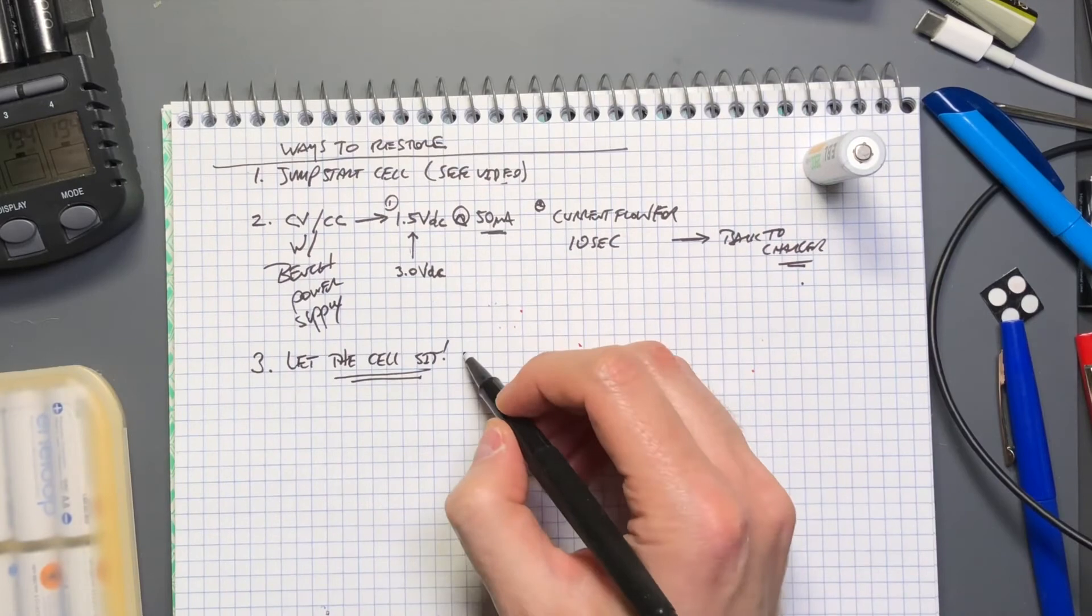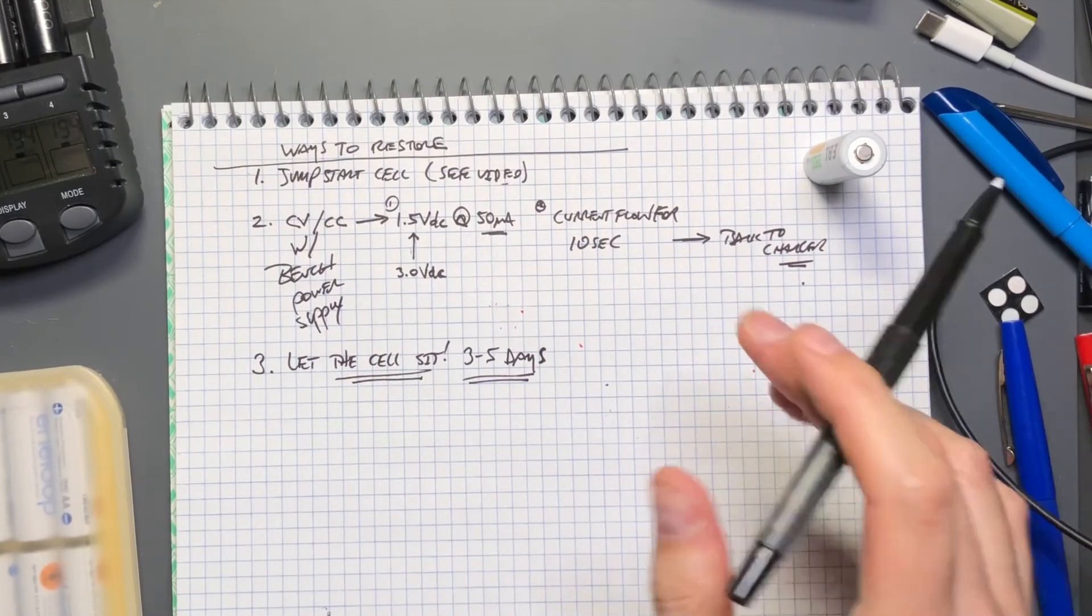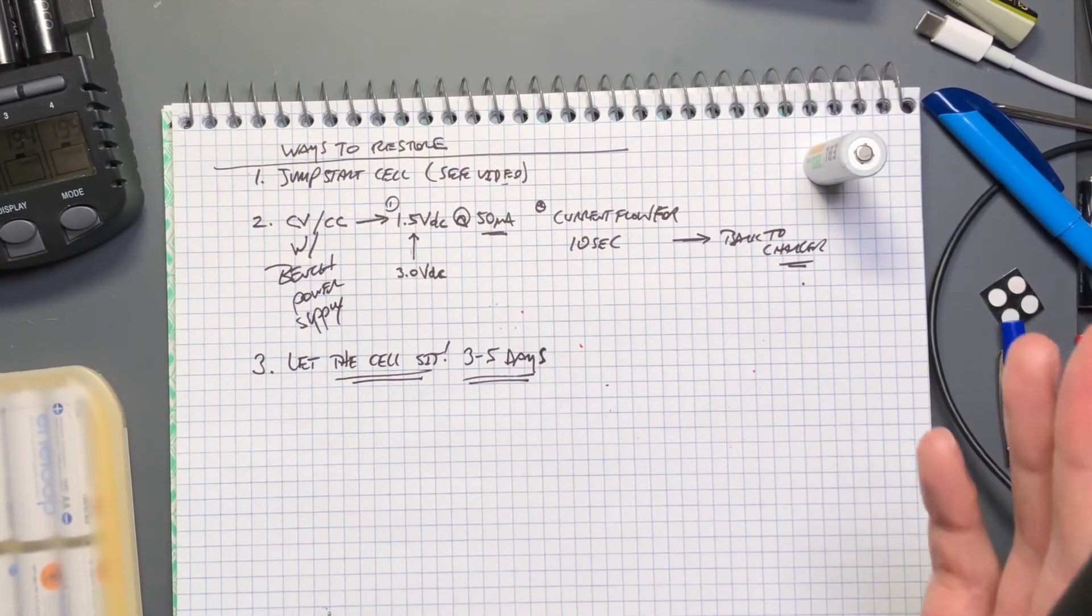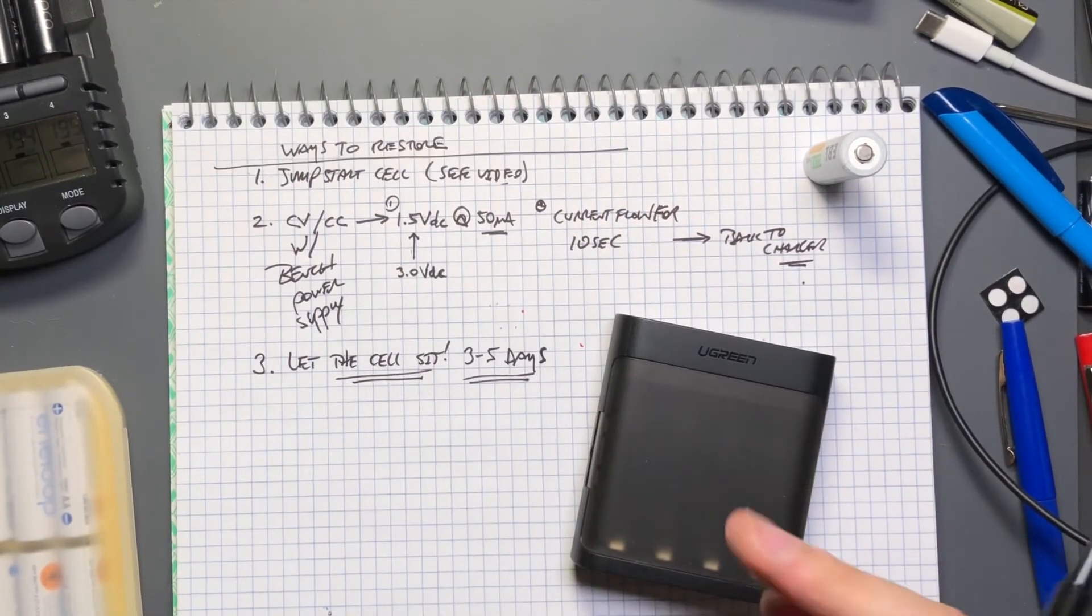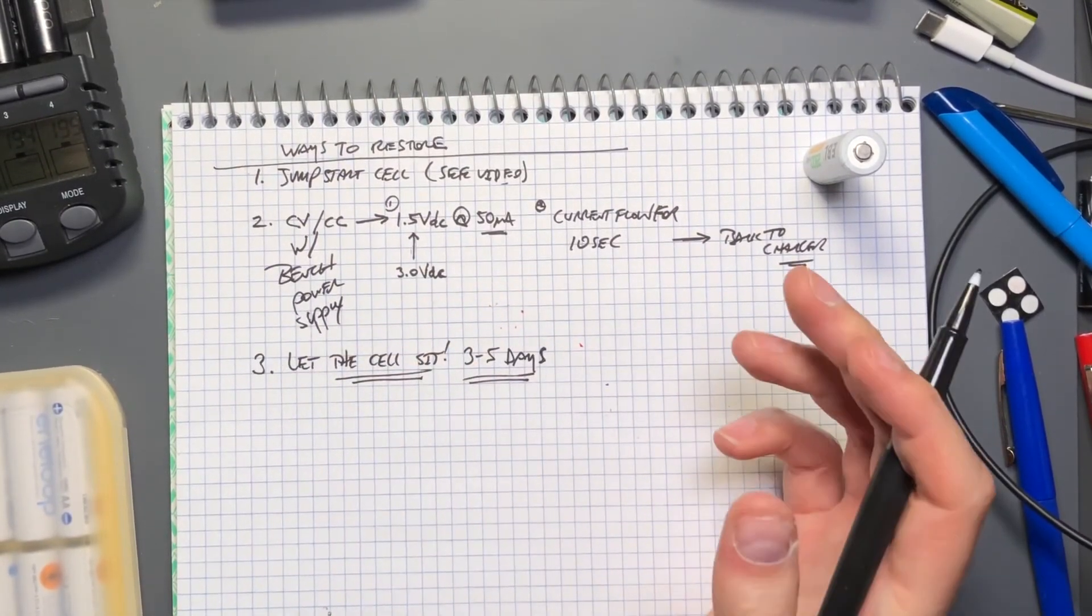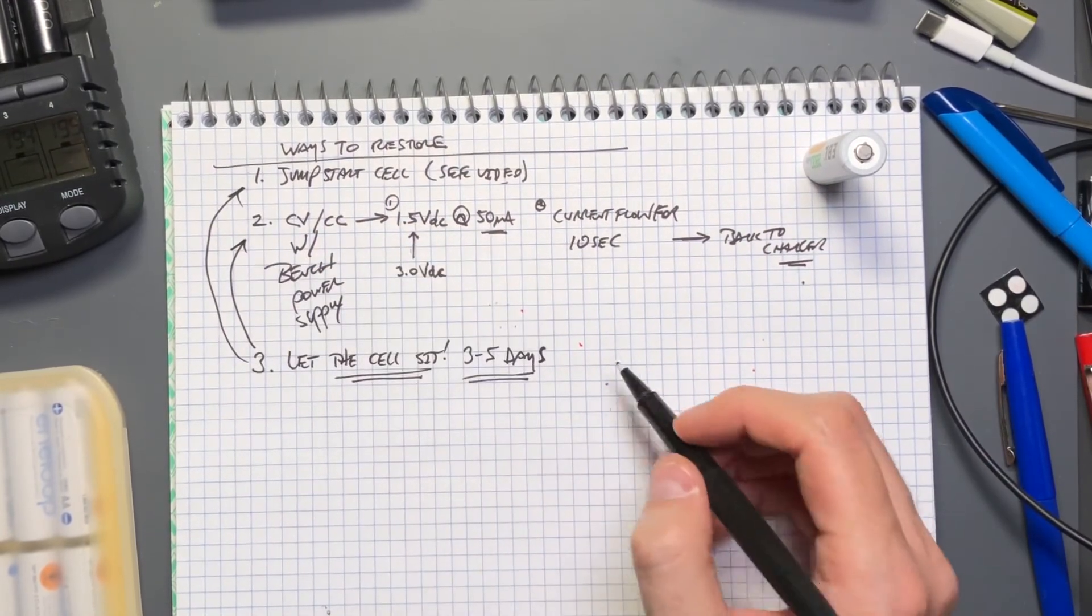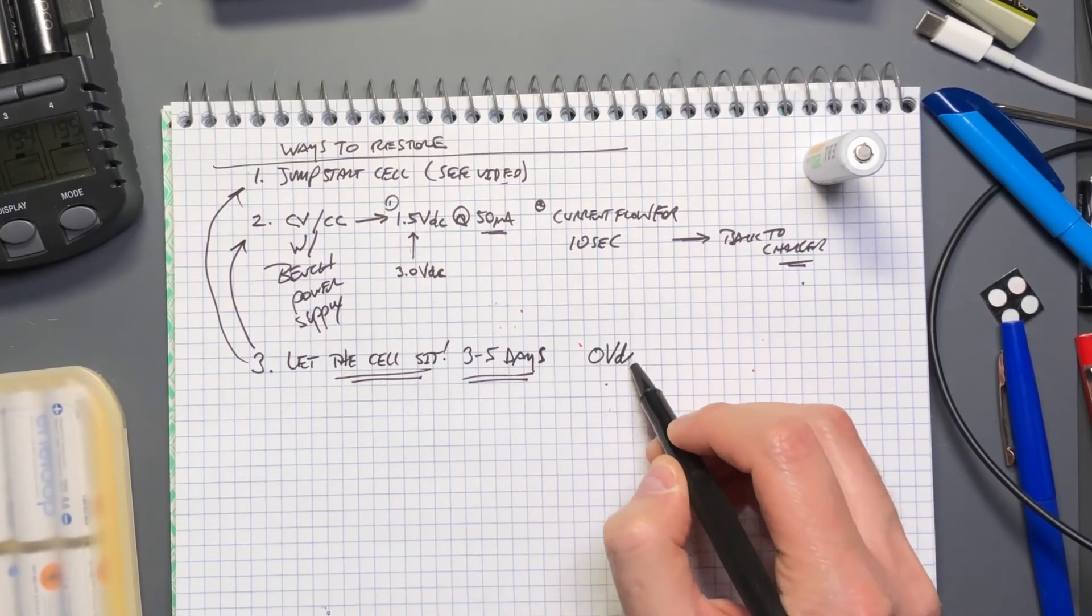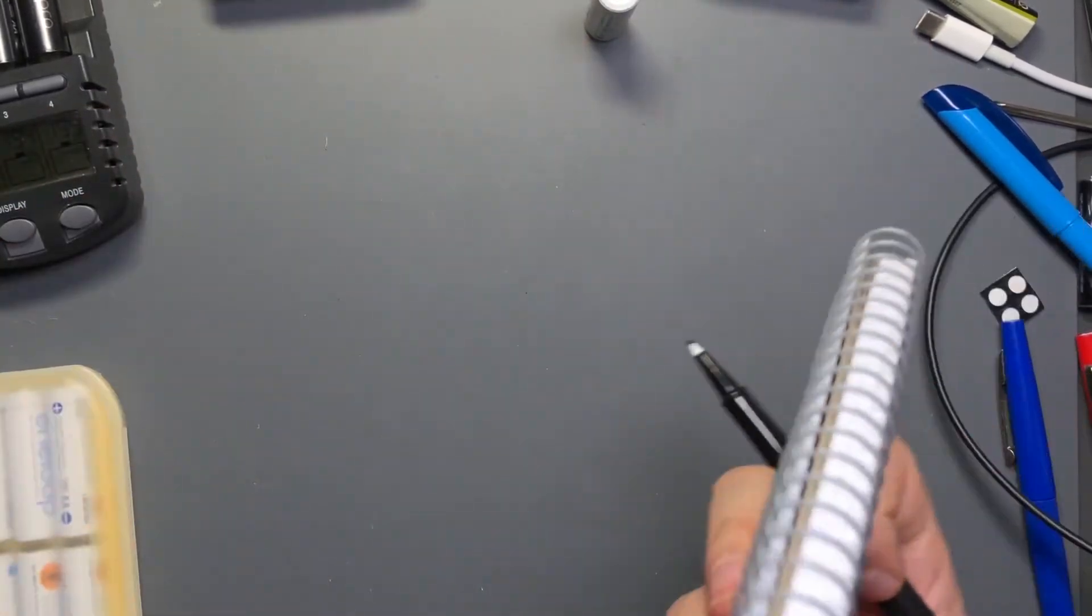For about maybe three to five days, and then after that give it a shot trying to charge it with the charger that you have that has the lowest charging current. If you only have one charger like you picked up this Ugreen charger, just put it in there and see what happens. If it starts blinking the light fast again, maybe give it a couple more days. If not, try one of the first two options.